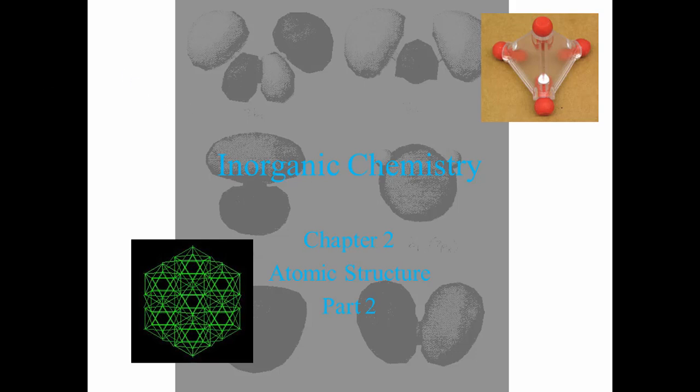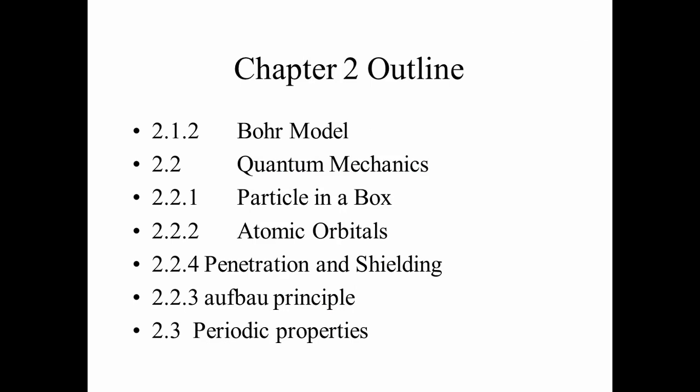Now we're going to continue our discussion of atomic structure. Last time we looked at some basics of quantum mechanics that are going to be used to apply to the electron around an atom. First we saw how the Bohr model described the electron around the atom, but then we saw how quantum mechanics changed the view of what an electron is and how that would apply in a simple system of the particle in a box.